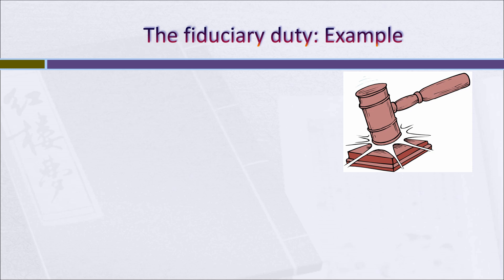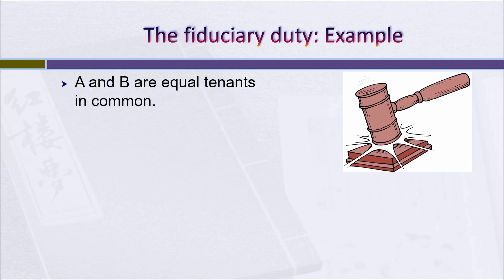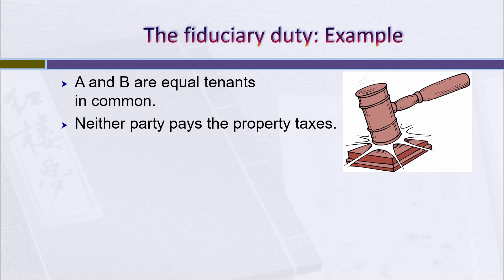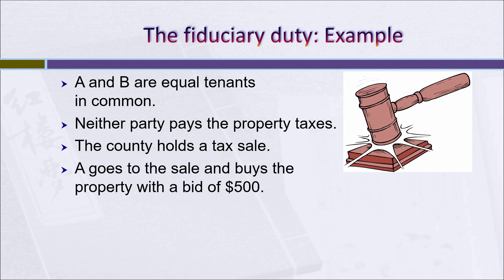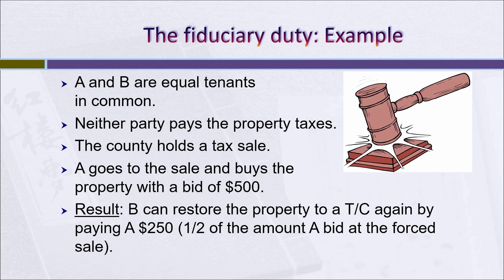Here's an example of the fiduciary duty. A and B are equal tenants in common, and neither party pays the property taxes. The county therefore ultimately holds a tax sale. A goes to the sale, outbids everybody else, and buys the property for $500. The result is that B can restore the property to a tenancy in common again by paying A $250 — which is B's share, or half of the amount that A bid at the forced sale. So ultimately the property can go back to being exactly what it was before if B is willing to reimburse A the $250.